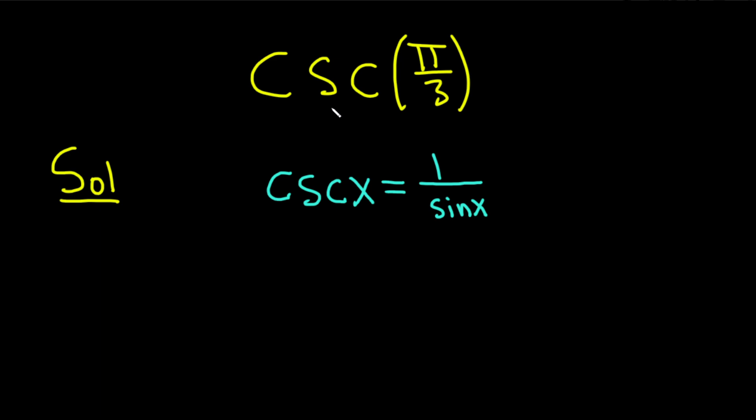And now we have cosecant of pi over 3. So all we have to do is replace all of the x's in this formula with pi over 3. So this is the cosecant of pi over 3 and that's equal to 1 over sine x. But for us x is pi over 3.